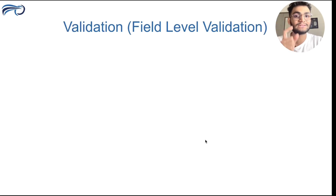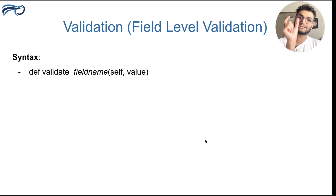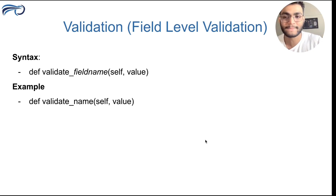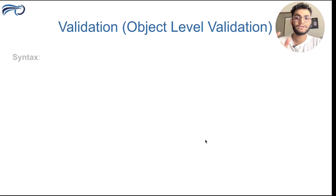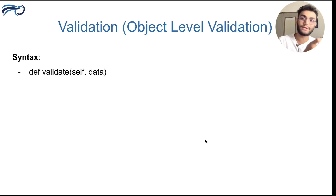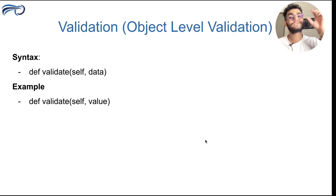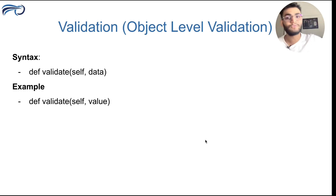The second is field-level validation, and the syntax is: def validate_<field_name>, for example def validate_name. Inside this function we write business logic. The third is object-level validation, with syntax: def validate(self, data) — this data or value will always be a dictionary containing all the submitted data. Now let's understand all these validations in code, so let's go back to our IDE.